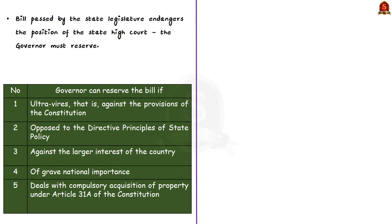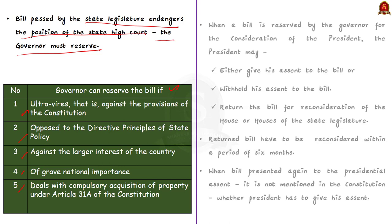The Governor can also reserve the bill for the consideration of the President. One scenario where the Governor must reserve the bill is when the bill passed by the state legislature endangers the position of the state High Court. There are other cases mentioned in the table where the Governor can also reserve the bill.